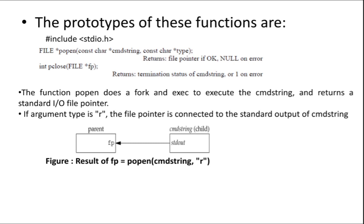You can close the pipe using a pointer, that is, the file pointer fp. The termination status of the command string will be returned, or -1 on error. The popen function does a fork — meaning a child will be created — and the child is the command string.